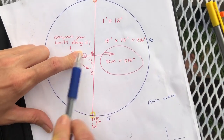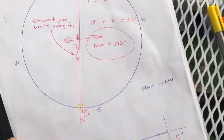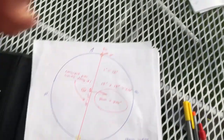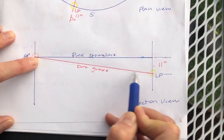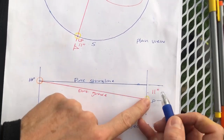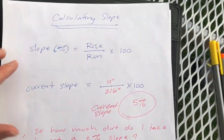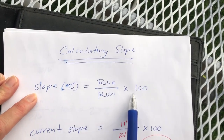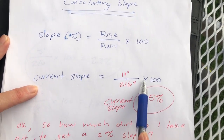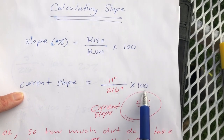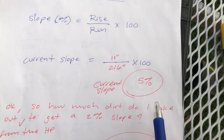If you looked straight through this, you'd see the pink string line here, and the red line is the dirt grade — with 11 inches between them. So let's calculate: slope in percentage equals rise over run times 100. The current slope equals 11 inches divided by 216 inches, times 100 — this gets us a 5 percent slope. So our current dirt grade is at 5 percent slope.